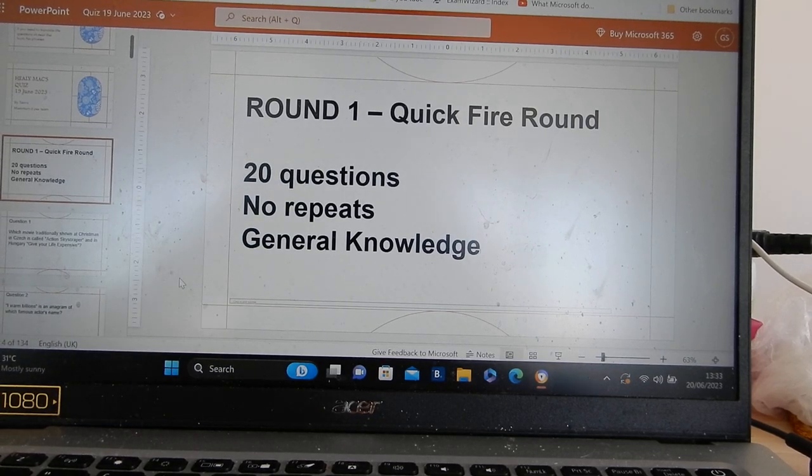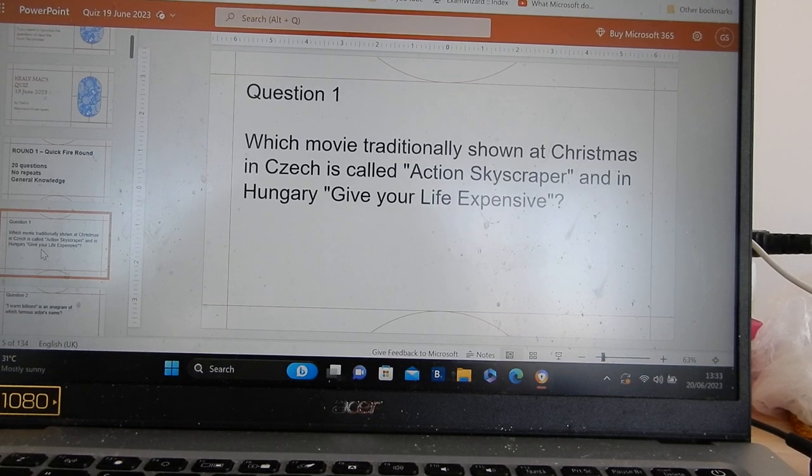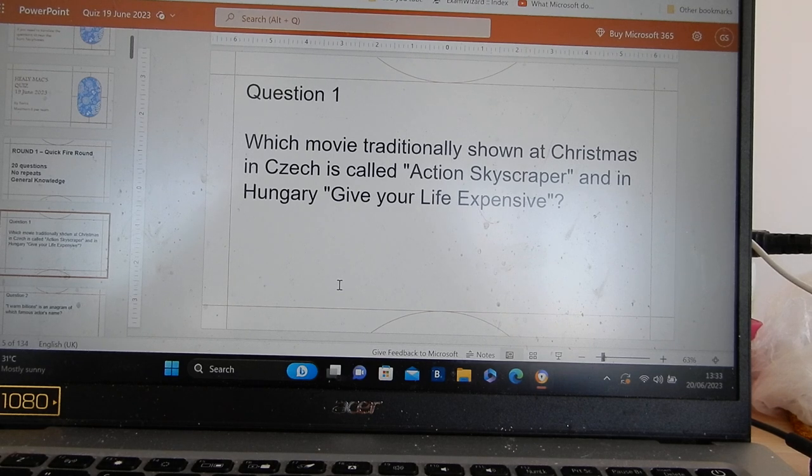Quick fire round. Question 1. Which movie traditionally shown at Christmas is Czech, is called Action Skyscraper, and in Hungary is called Give Your Life Expensive?